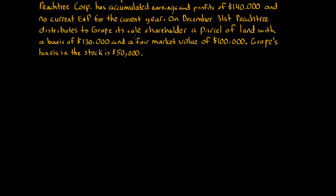Peachtree Corporation has accumulated earnings and profits of $140,000 and no current E&P for the current year. On December 31st, Peachtree distributes to Grape, its sole shareholder, a parcel of land with a basis of $130,000 and a fair market value of $100,000. Grape's basis in the Peachtree Corporation stock is $50,000.